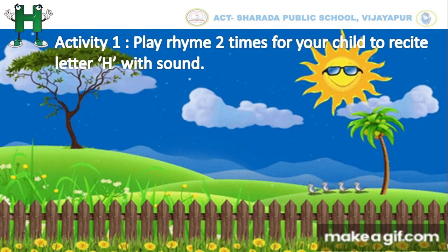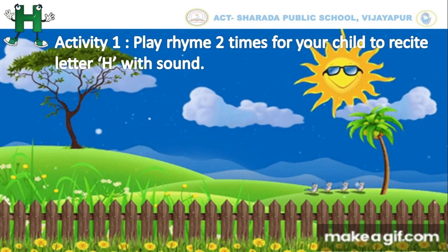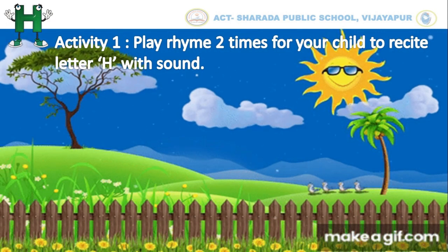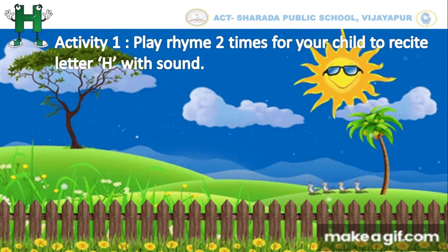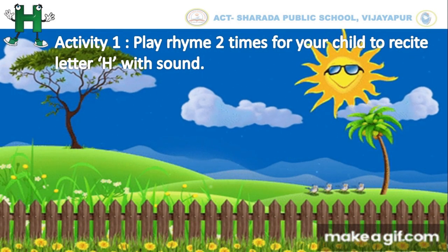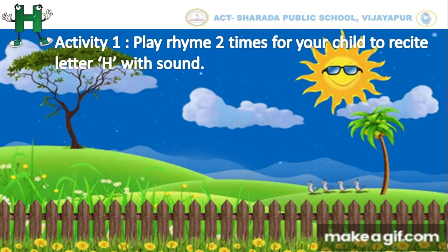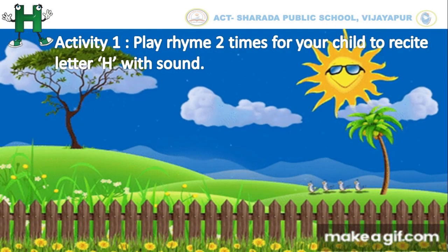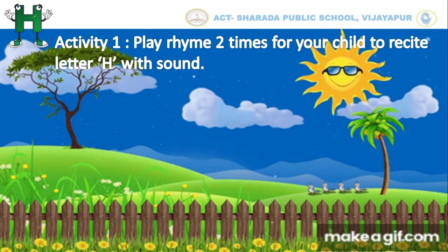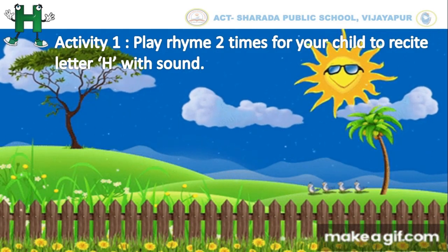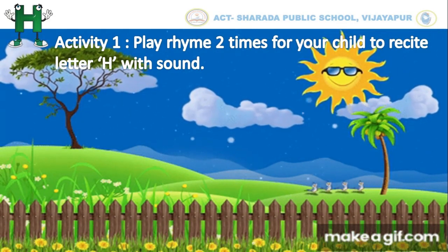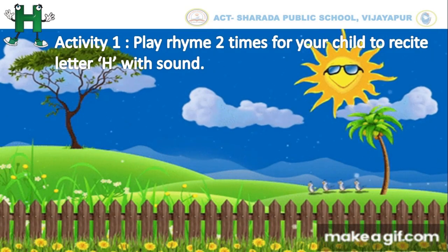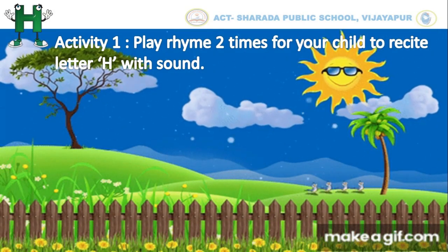So kids, let us do our first activity: play the rhyme two times for your child to recite letter H with sound. Dear parent, scan the given QR code to play the rhyme on letter H, which we have given in the worksheet. Then encourage your child to repeat the sound.